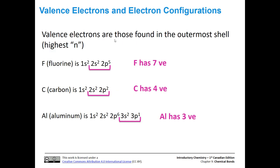From previous videos on electron configurations, when we want to identify valence electrons, we look for those in the outermost shell — the highest n. Looking at fluorine: 1s², 2s², 2p⁵. The 1s² electrons are core electrons, not valence electrons. The n=2 shell is the valence shell, so fluorine has seven valence electrons. Carbon has core electrons in 1s² and valence electrons in 2s² and 2p² — four valence electrons total. Aluminum has core electrons in 1s², 2s², 2p⁶, and three valence electrons in the n=3 shell.